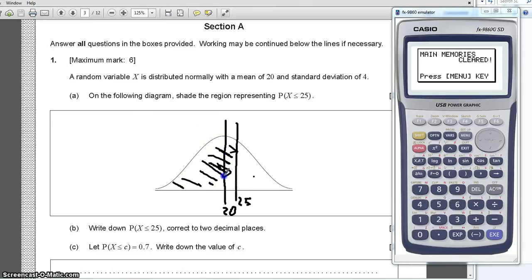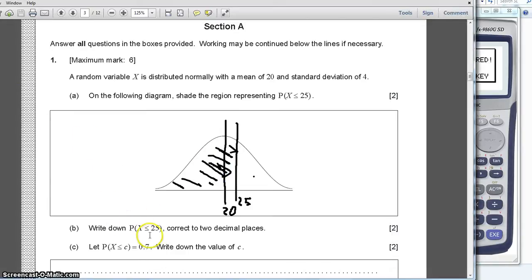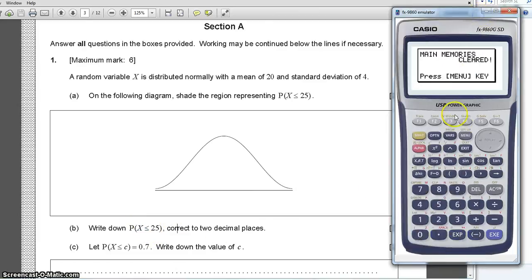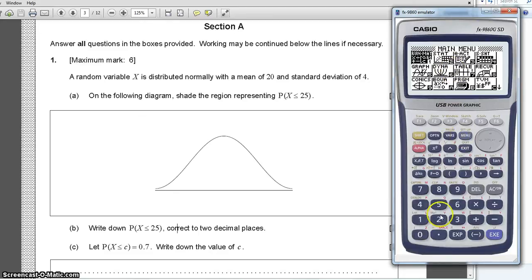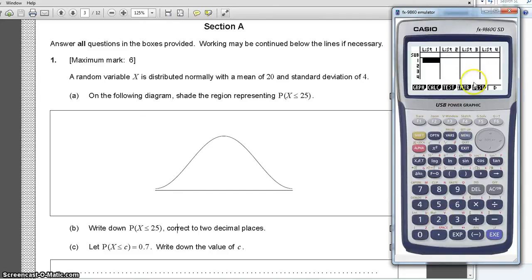Now, go to the calculator part. It says write down the probability of X being smaller than or equal to 25. How can we do this in the calculator? Let's take our calculator and go to menu number 2 for statistics. You're going to notice this little button, dist, and let's press it. And here you have some distributions. This is the normal one, normal distribution.